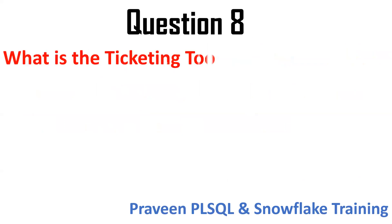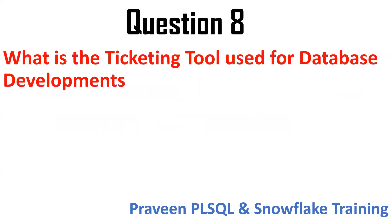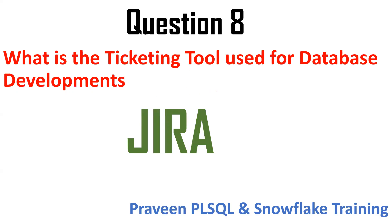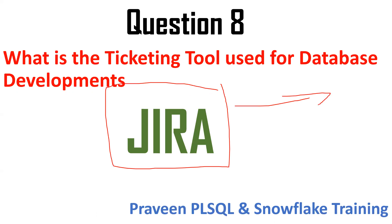The next question is: what is the ticketing tool used? When a requirement comes — such as creating a table or altering a column — we use JIRA as the ticketing tool. JIRA is very important; it tracks user stories, bugs, and all tasks, helping developers manage and track all requirements as a database developer.